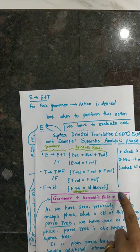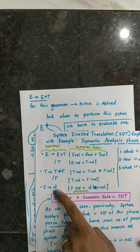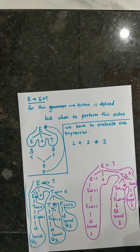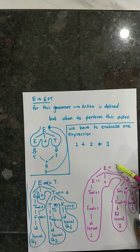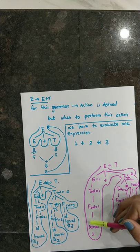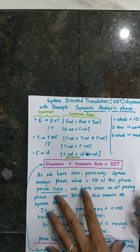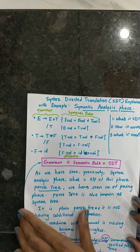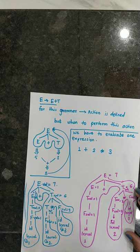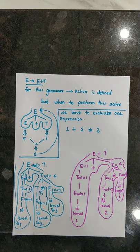F.val, T.val — these are nothing but attributes. And id.lexval is the terminal that gives you the actual value of your expression. The terminal gives its lexval, and finally you get the value at the root node itself. You traverse the tree from root, top to bottom and left to right, and the final answer is obtained at the root node. Grammar plus semantic rules is nothing but SDT — Syntax Directed Translation. I hope this basic concept is clear. Thank you.